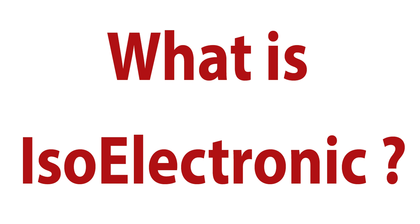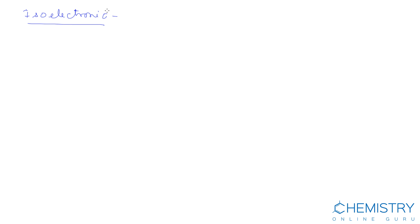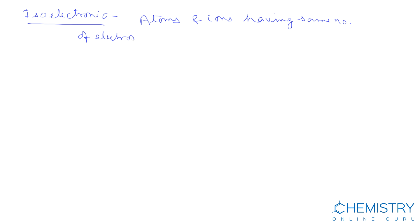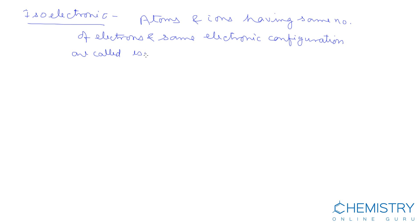Welcome to chemistryonline.guru. Today we will discuss isoelectronic species. Atoms and ions having the same number of electrons and the same electronic configuration are called isoelectronic.